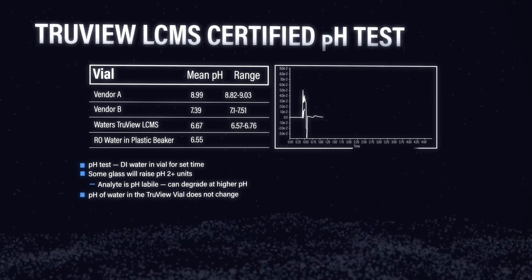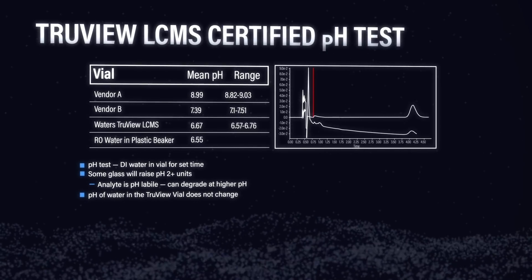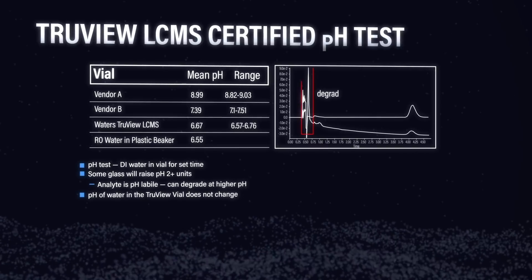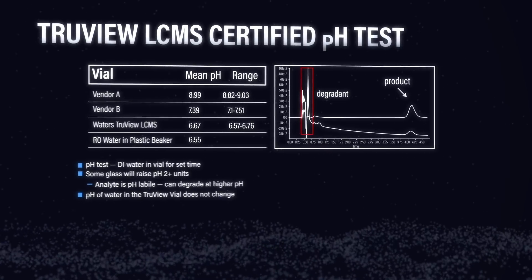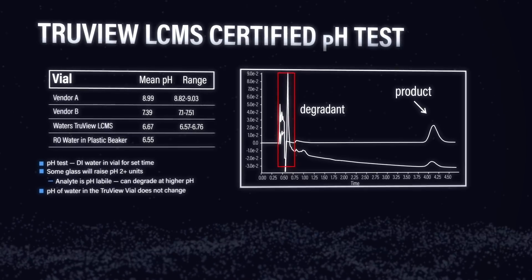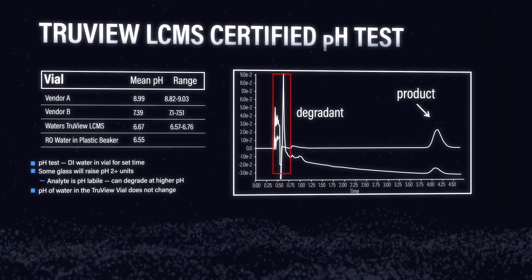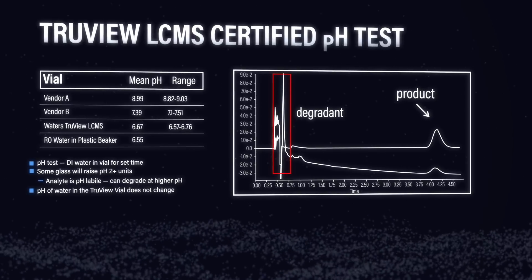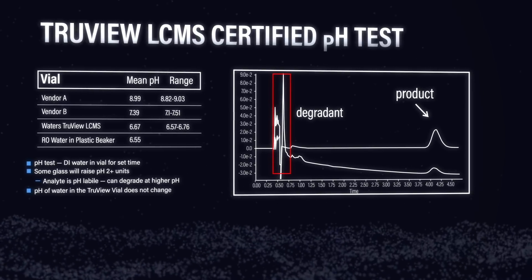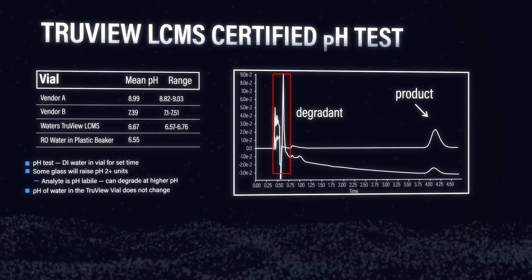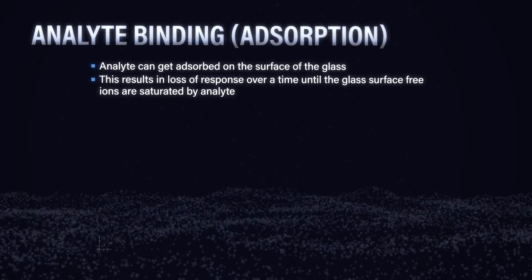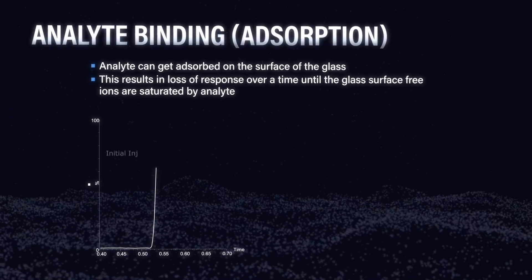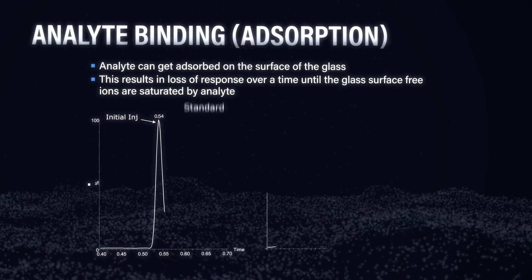But when you look at the data, you can see that some of these vials significantly increase the pH of the water. In doing so, if you have analytes that are sensitive or degrade under more alkaline pH conditions, you're going to cause some problems — the sample is going to degrade.